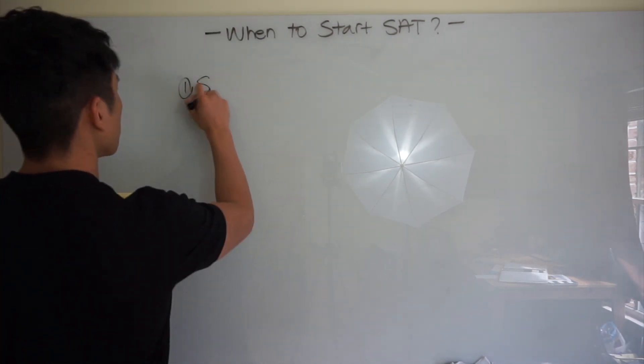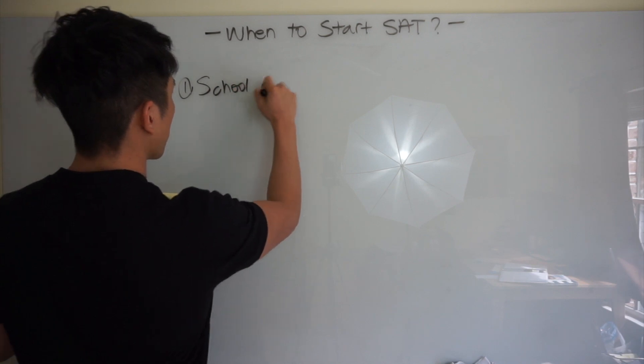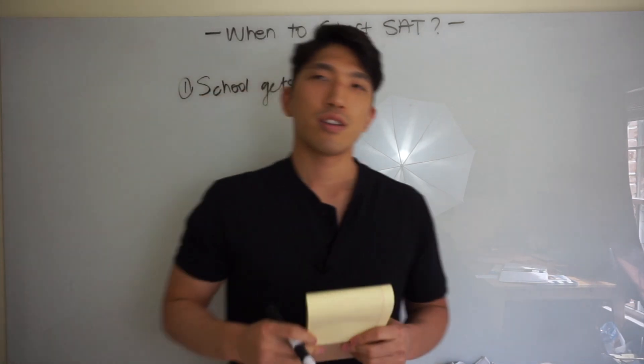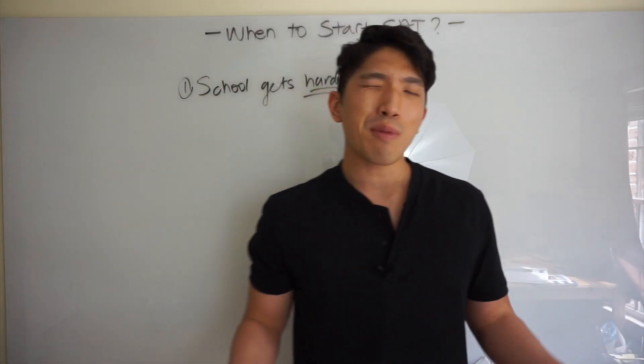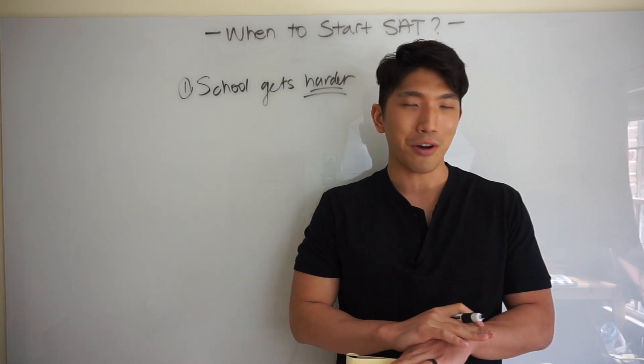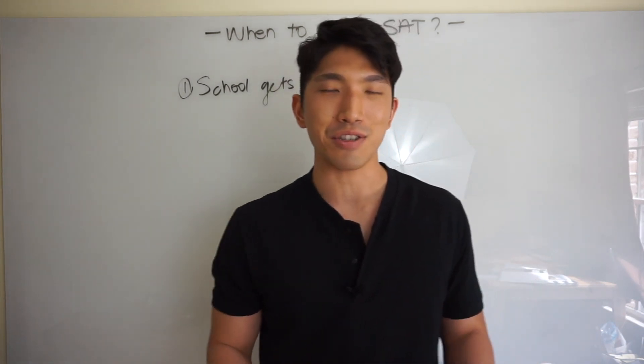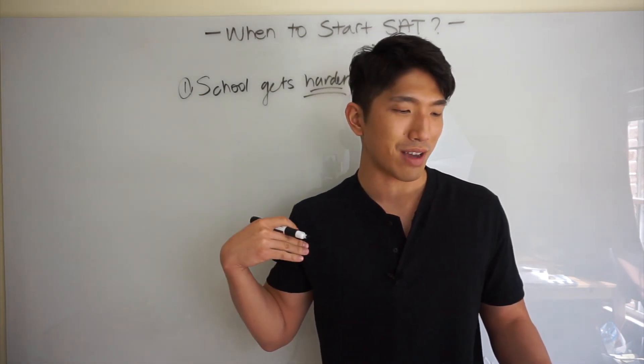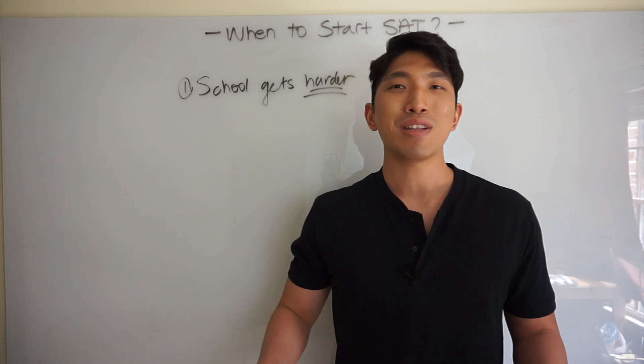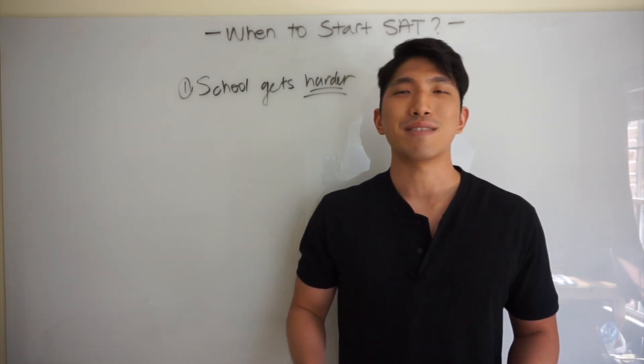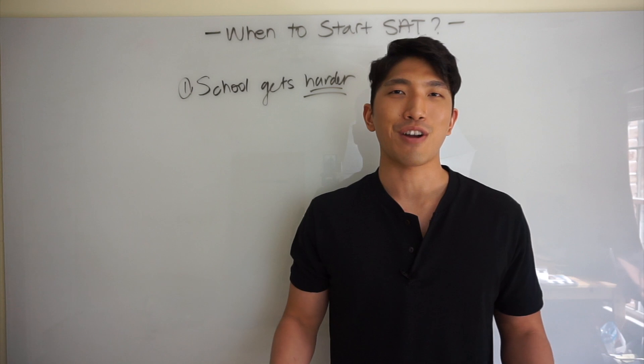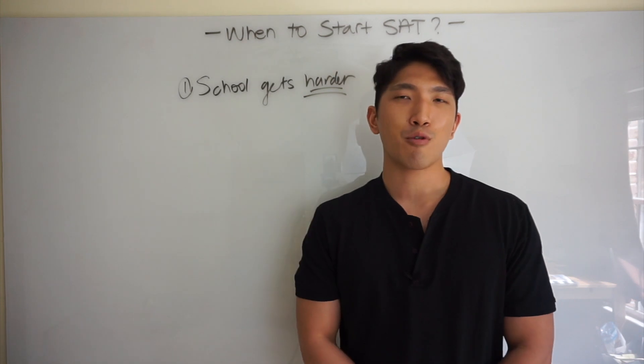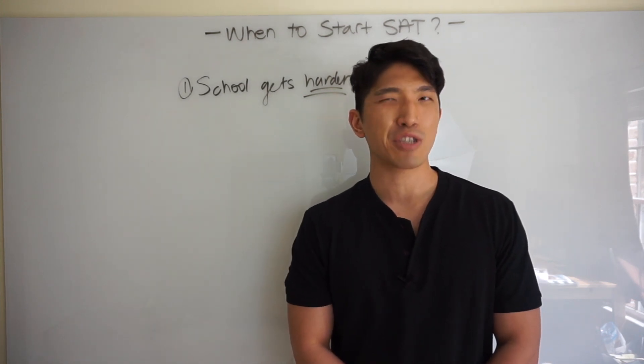First reason is that school gets harder. You start high school, freshman year, not too busy, sophomore year, maybe a couple AP classes, and junior year is just where all the AP classes come in and it's going to get super hard. The SAT is going to take a lot of time to study and practice, and it's going to really take time to raise your score. School is going to get harder, so it's easier for you to start as soon as possible when you're not too busy in your freshman or sophomore year. My optimal recommendation time is going to be about sophomore year.